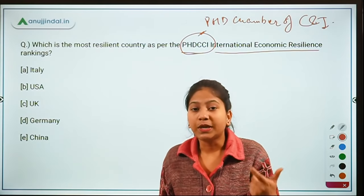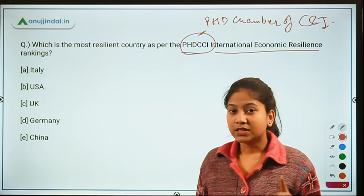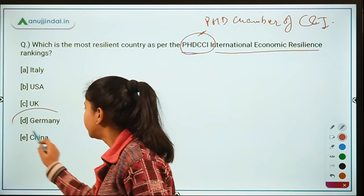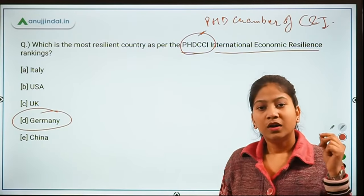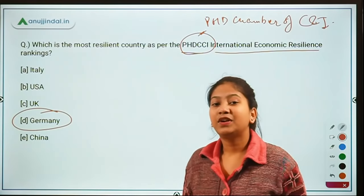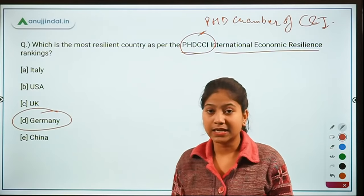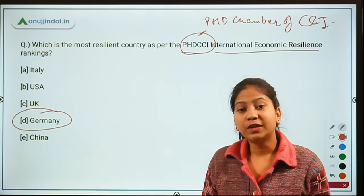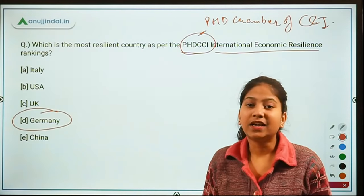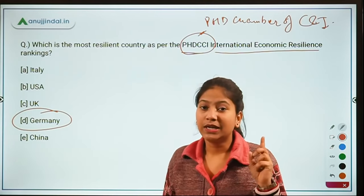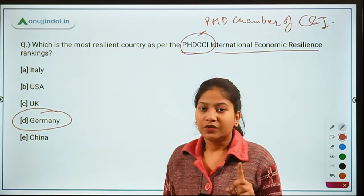The most resilient economy in 2021 is Germany, which is ranked number one. India has also performed very well and is one of the top-performing countries among the top 10 leading economies. India's rank will be revealed shortly, but first let's look at the parameters of this ranking.